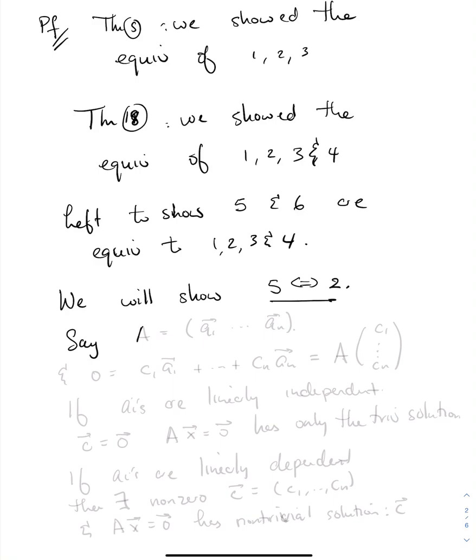So say A is a matrix with column vectors given by the A sub i's. And say that 0 is equal to C1 A1 plus dot dot dot plus Cn An. We're looking to test the linear independence of the columns of A. By matrix multiplication, this is A times the matrix C1 through Cn.